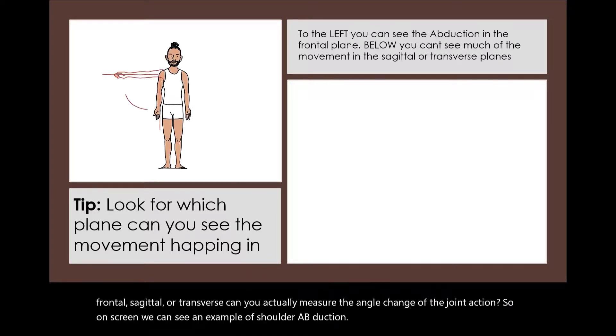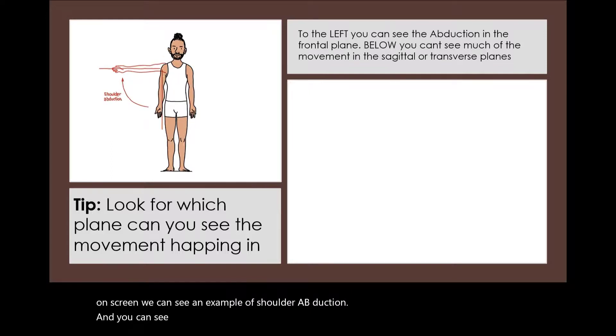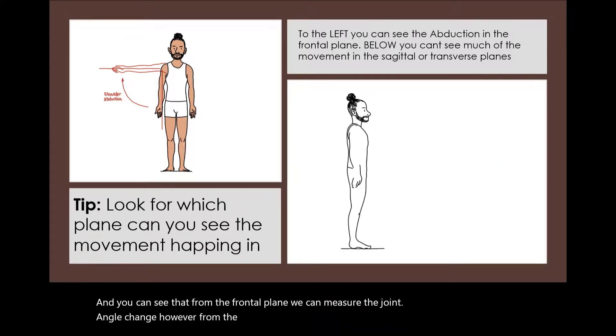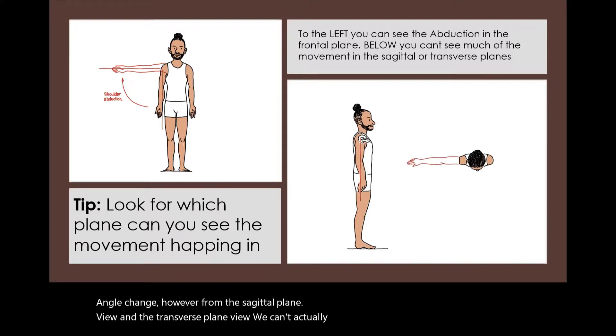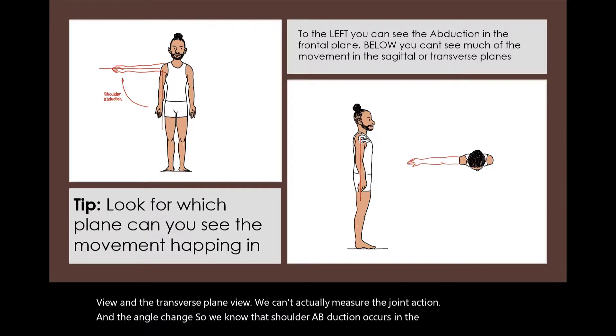You can see that from the frontal plane, we can measure the joint angle change. However, from the sagittal plane view and the transverse plane view, we can't actually measure the joint action and the angle change. So we know that shoulder abduction occurs in the frontal plane because that's the plane that we can measure the angle change.